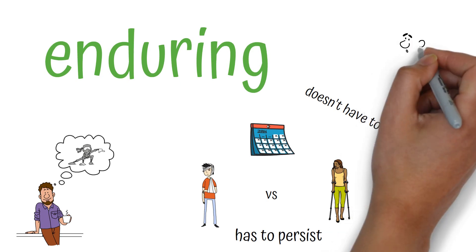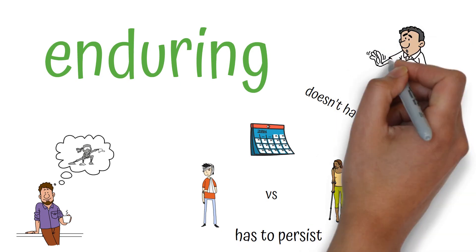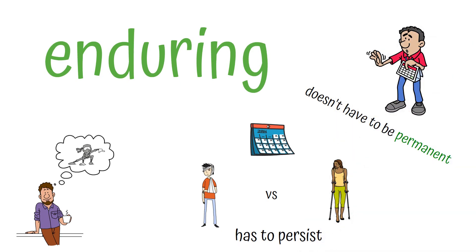No problem, Kuhn says. We have all kinds of vague definitions. He admits that if we put a number on it, this is going to seem very arbitrary. If my injury lasts for a year, it's an injury, but if it lasts for a year and a day, it's a disability? Better, he argues, to keep it a little vague.